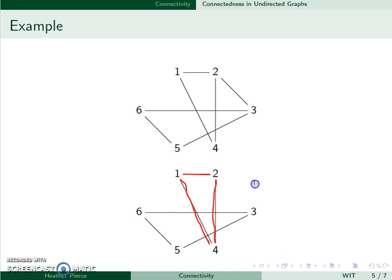So not only is this not connected, we can see that it has two components, because there are two pieces of this graph.